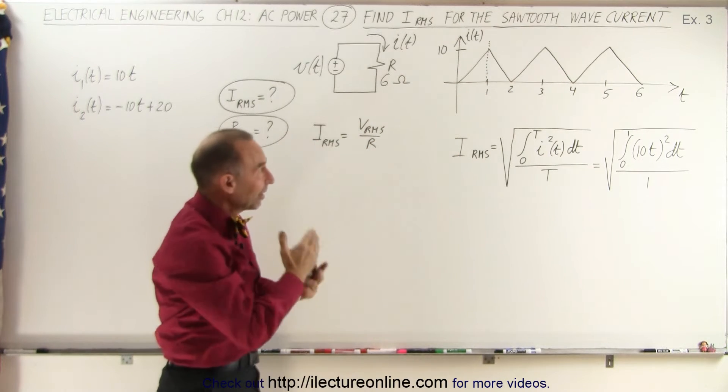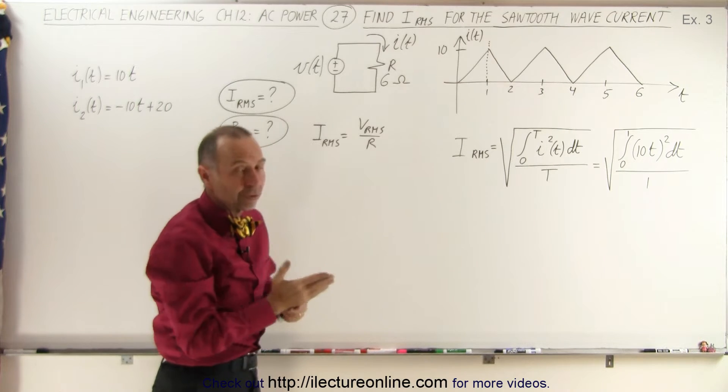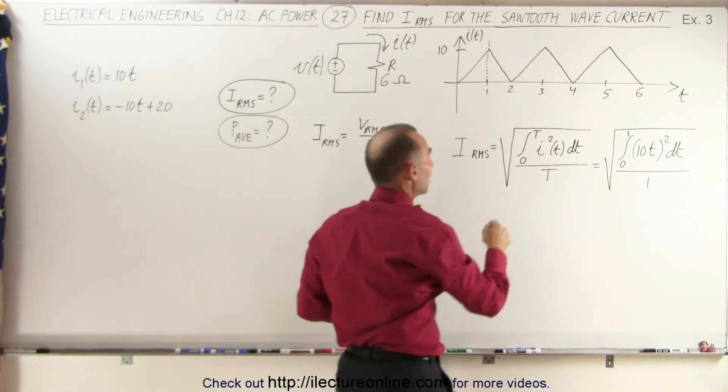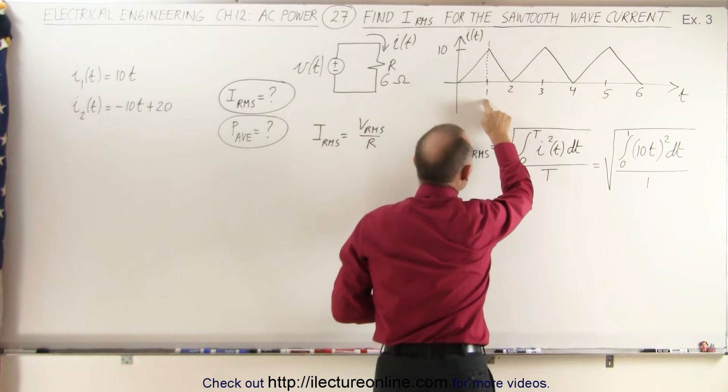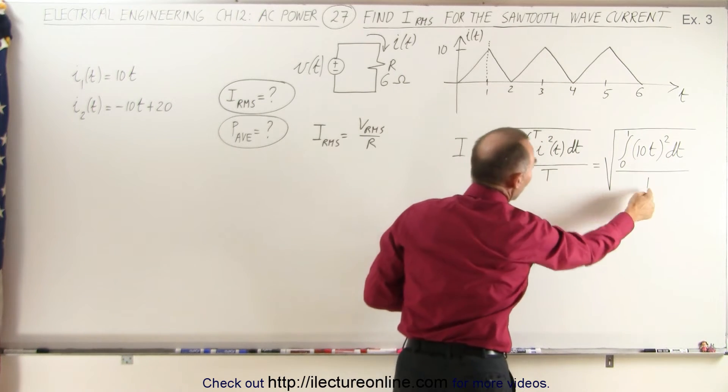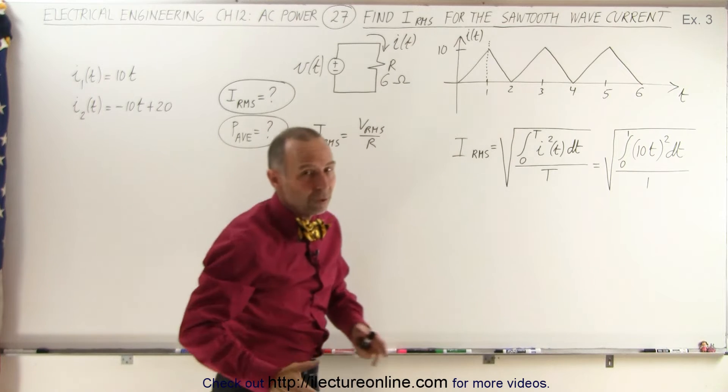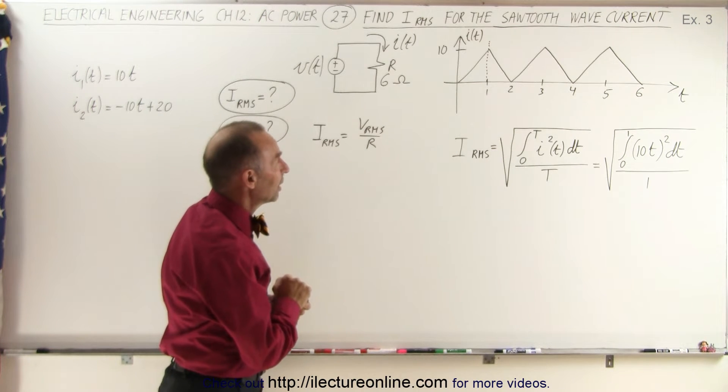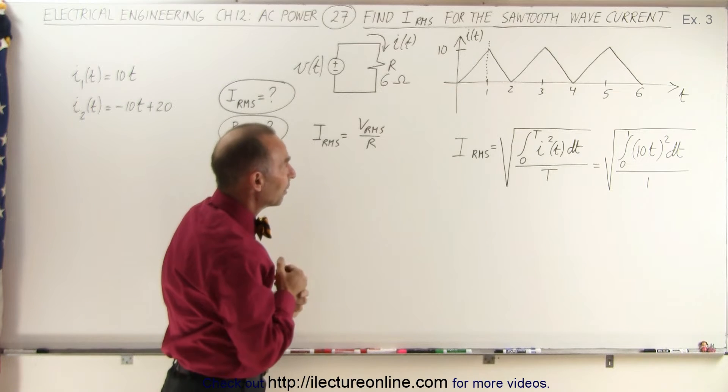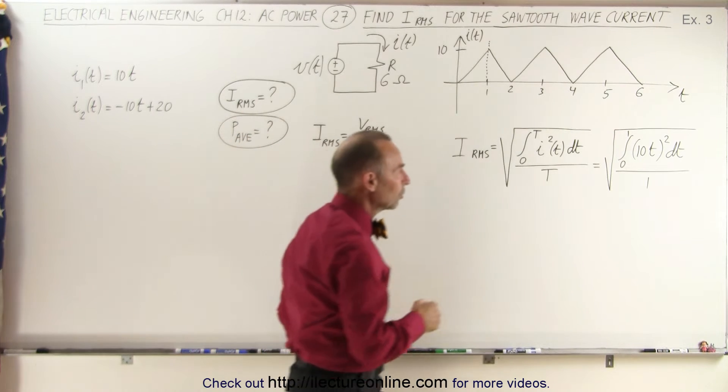So the RMS current for the left side equals the RMS current for the right side. When we integrate from zero to the period, we can actually integrate from zero to one and call the period one. This makes it easier, and we can assume the RMS current is the same for both sides.